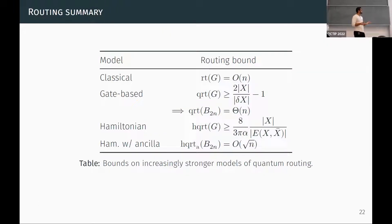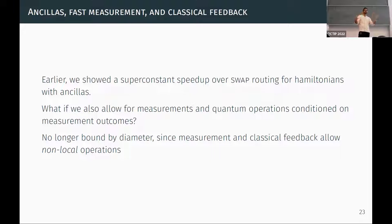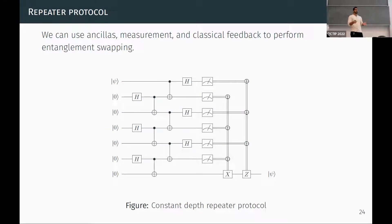To summarize so far: classical routing can be done in linear time using swap networks. We have lower bounds on gate-based and Hamiltonian-based routing in terms of graph expansion properties, and we gave an example of a quadratic speedup from Hamiltonian evolution along with ancillas. Now we want to see how far we can take this. In particular, what if we allow ourselves to measure ancillas and do quantum operations conditioned on measurement outcomes — LOCC? This means we're no longer bound by the diameter lower bound, since conditioned gates allow non-local operations, enabling quantum teleportation in constant depth via a repeater protocol using entanglement swapping.